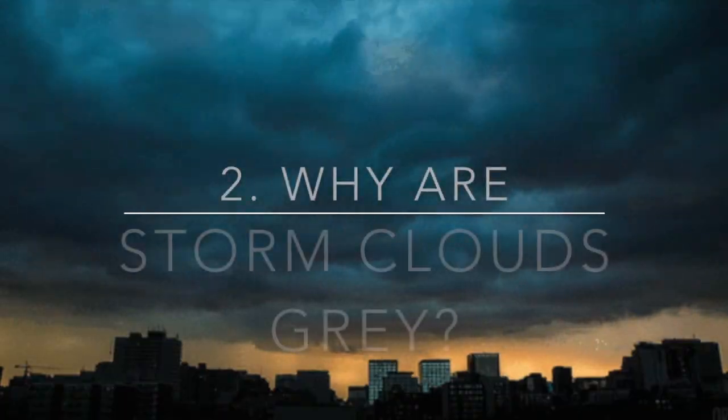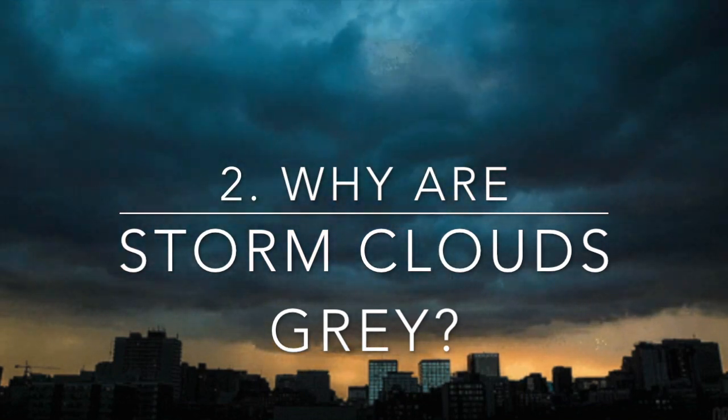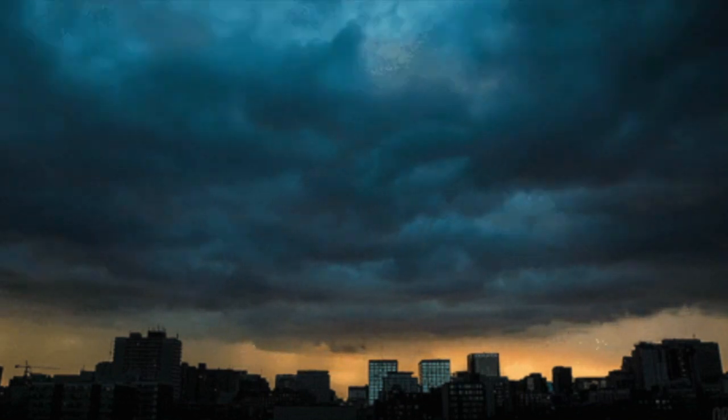Great, so after talking about why regular clouds are white, let's find out why storm clouds are gray. The reason that rain clouds are gray is very similar to why regular clouds appear white. Storm clouds tend to have larger water droplets in them as it is about to rain. These larger drops are not able to scatter light, but rather they absorb it.